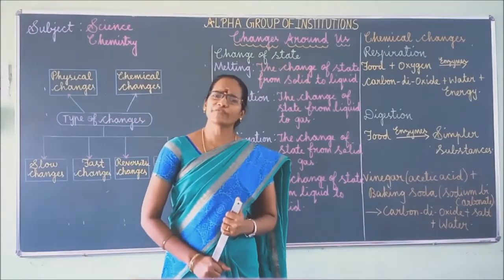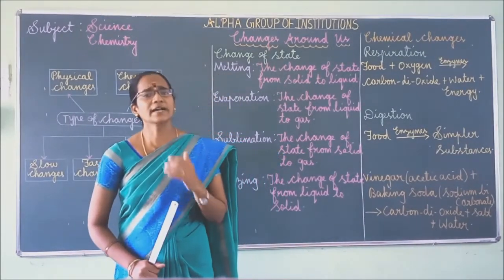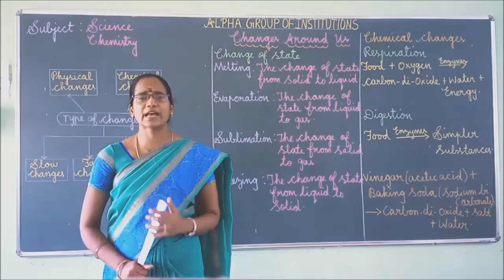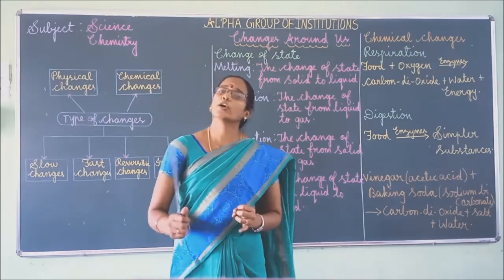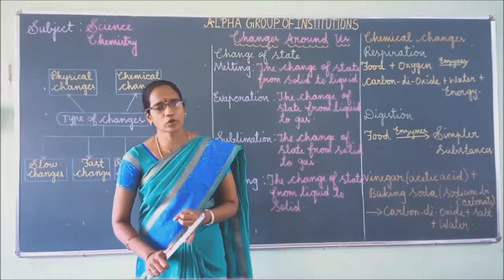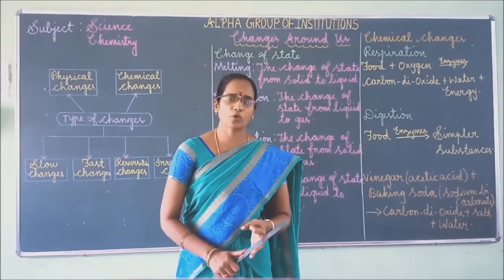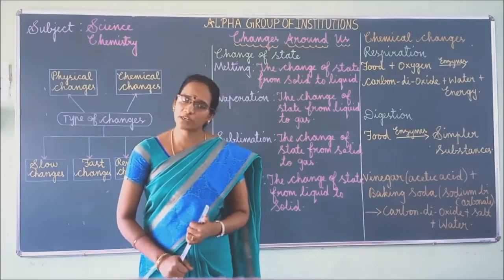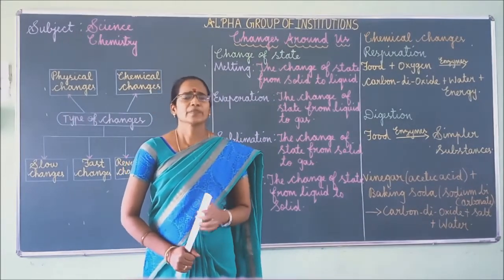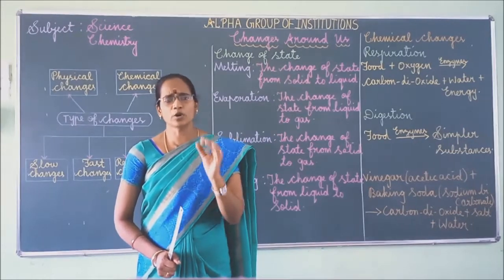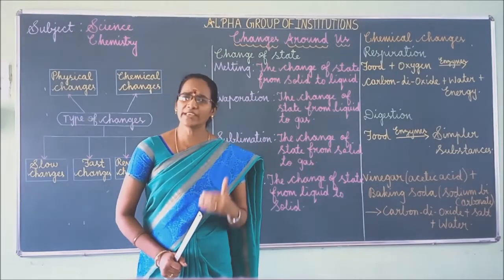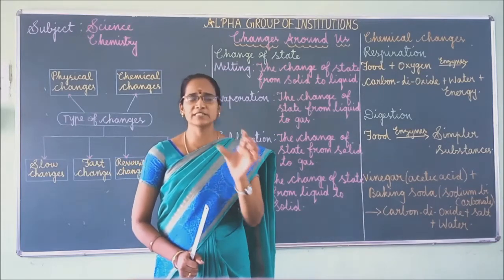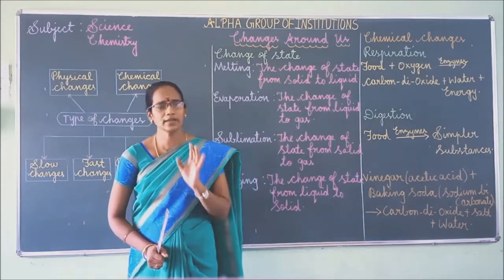Some of the changes we observe in our everyday life are: blowing of an electric bulb, drying of clothes, evaporation of water, ripening of fruits, and formation of curd from milk. These are some of the changes we observe in our daily life.